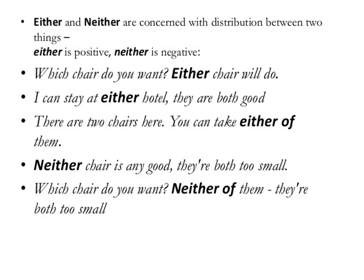Either and neither are concerned with distribution between two things. Either means one or the other of two — if not both, then definitely one would be there, which is positive. Neither is negative, meaning not one and not the other of two. 'Which chair do you want? Either chair will do' — positive. 'Neither chair is any good — they are both too small' — negative.